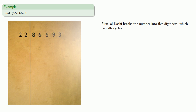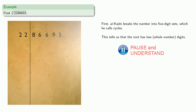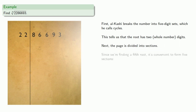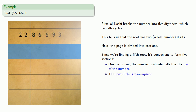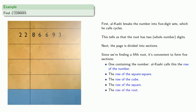There's one full cycle of five and one partial cycle, and this tells us that the root has two whole number digits. Next, the page is divided into sections. Since we're finding a fifth root, it's convenient to form five sections. The first section contains the number — Al-Kashi calls this the row of the number. Since we're extracting the fifth root, we can think of our number as the fifth power of something. The row below it is the fourth power, which Al-Kashi called the row of the square square; below that we have the row of the cube, the row of the square, the row of the root, and finally the row of the result.